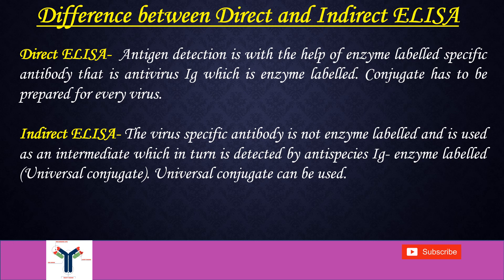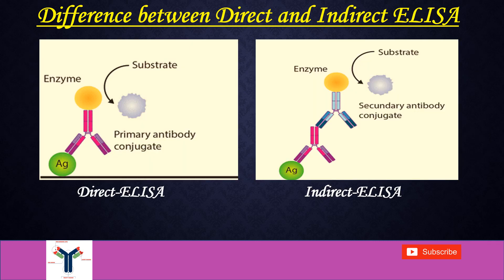What is the difference between direct and indirect ELISA? In direct ELISA, antigen detection is with the help of a labeled enzyme-specific antibody — that is antivirus IgG which is enzyme labelled. Here we have to prepare a conjugate for every virus. Whereas in indirect ELISA the virus-specific antibody is not enzyme labelled and is used as an intermediate, which in turn is detected by antispecies IgG enzyme labelled — that is a universal conjugate. Universal conjugate can be used for any detection purpose.